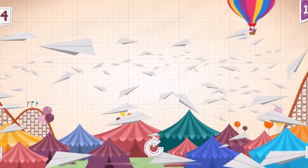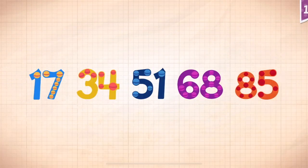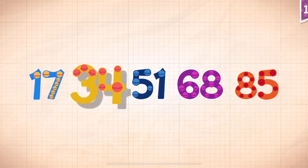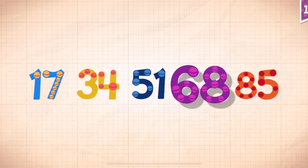Scampi and Rocky threw 84 paper airplanes into the sky. Count by 17s. 17, 34, 51, 68, 85.